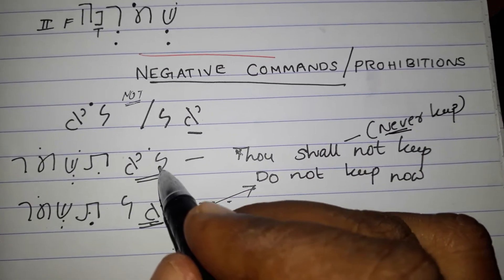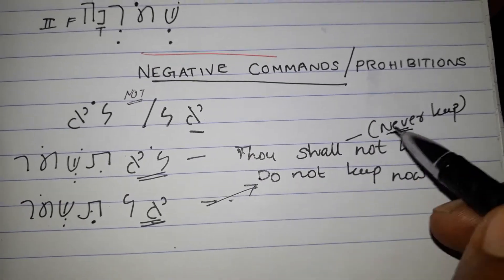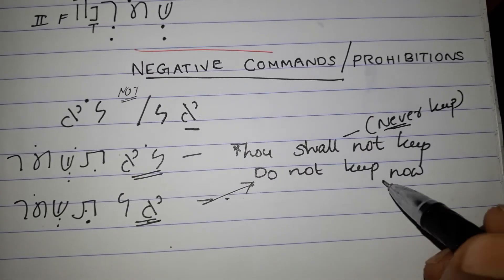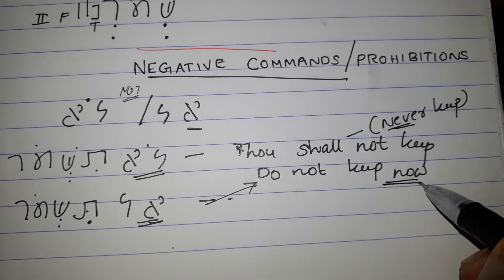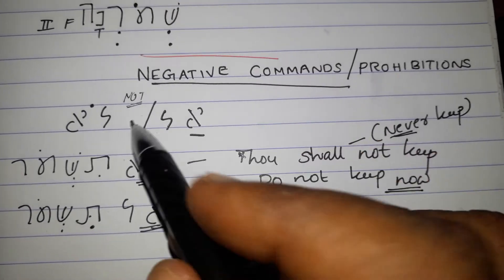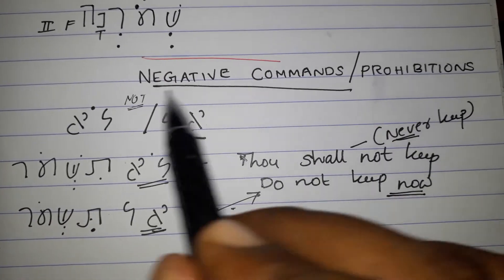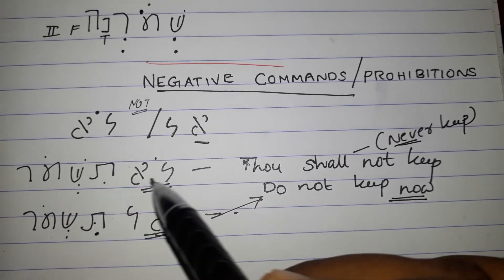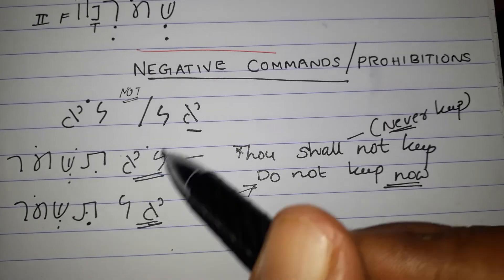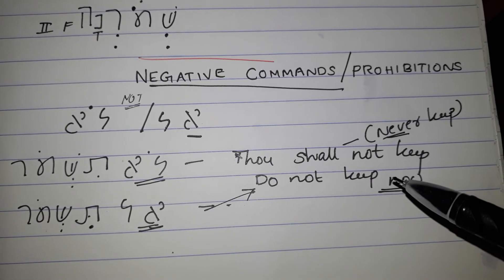'Lo' means permanent prohibition — never keep, that is forever. 'Al' means immediate prohibition — do not keep now. So these are the two words used for negative commands and prohibitions in Hebrew: 'lo' and 'al'.